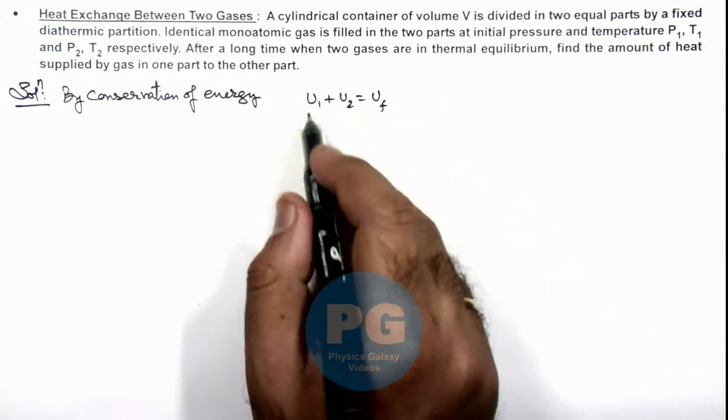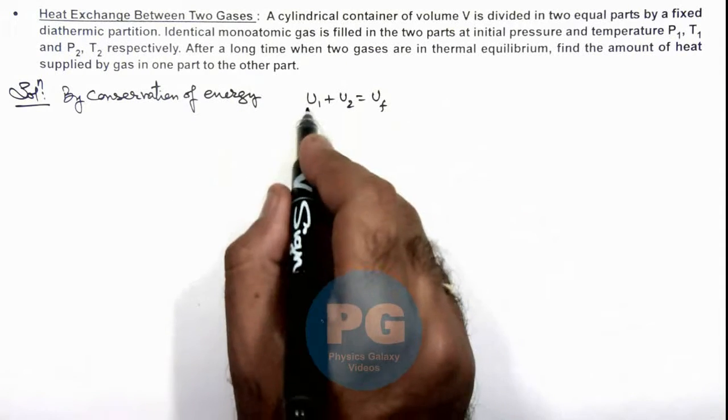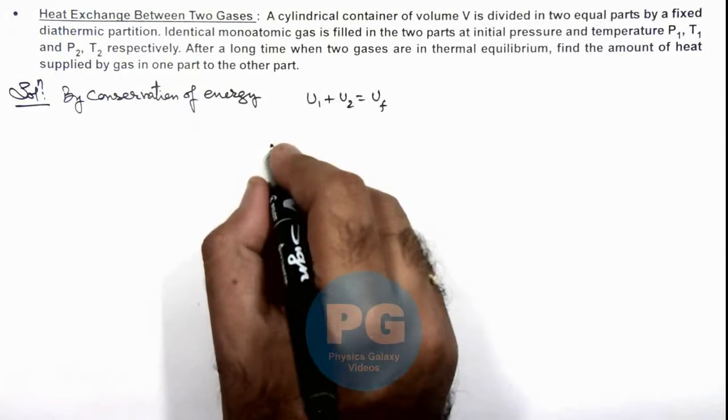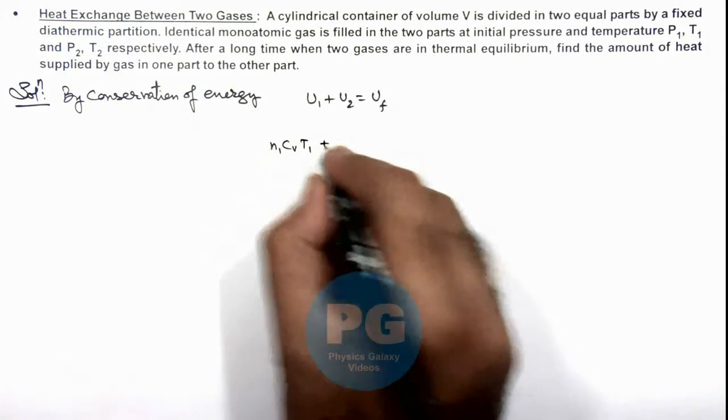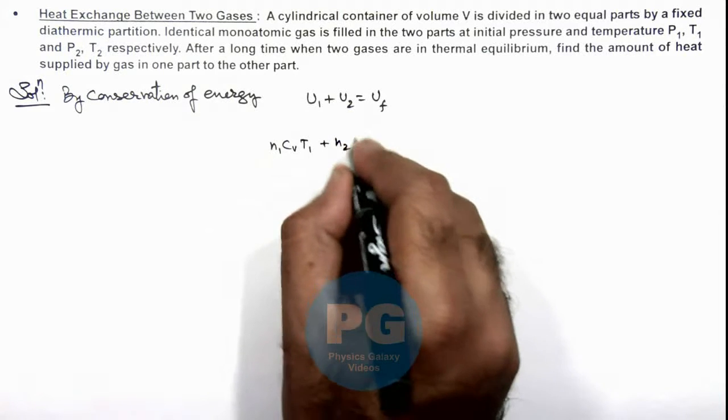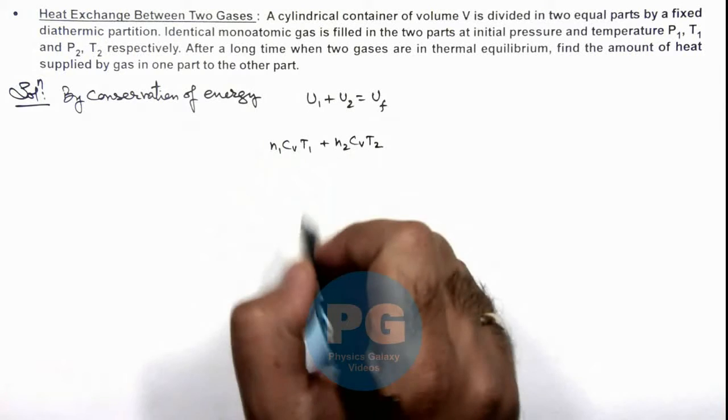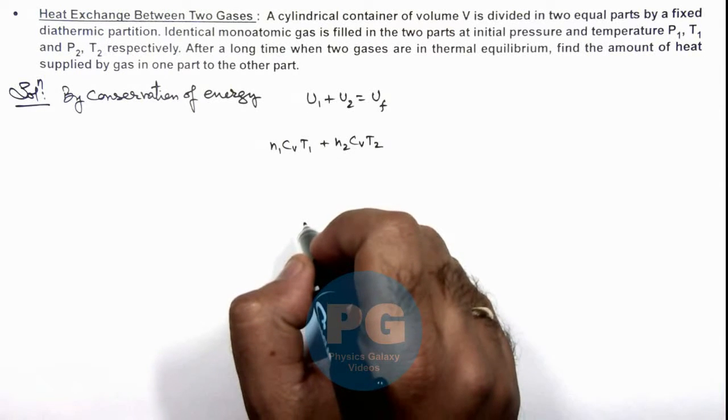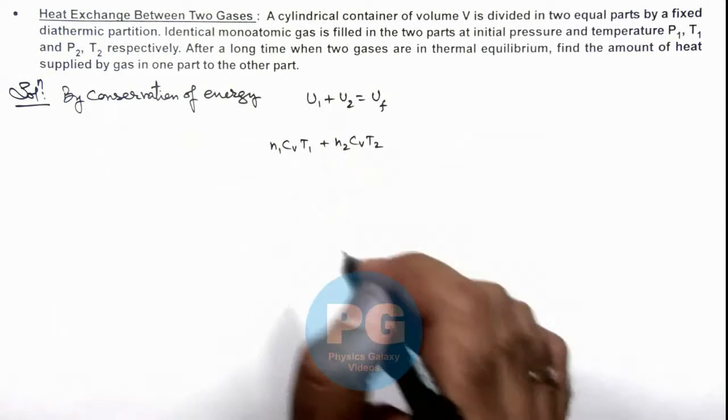As monoatomic gas we are using, internal energy of first gas we can write as n₁CᵥT₁ plus internal energy of second gas is n₂CᵥT₂, where n₁ and n₂ are the number of moles of the two gases used, and T₁, T₂ are initial temperatures.